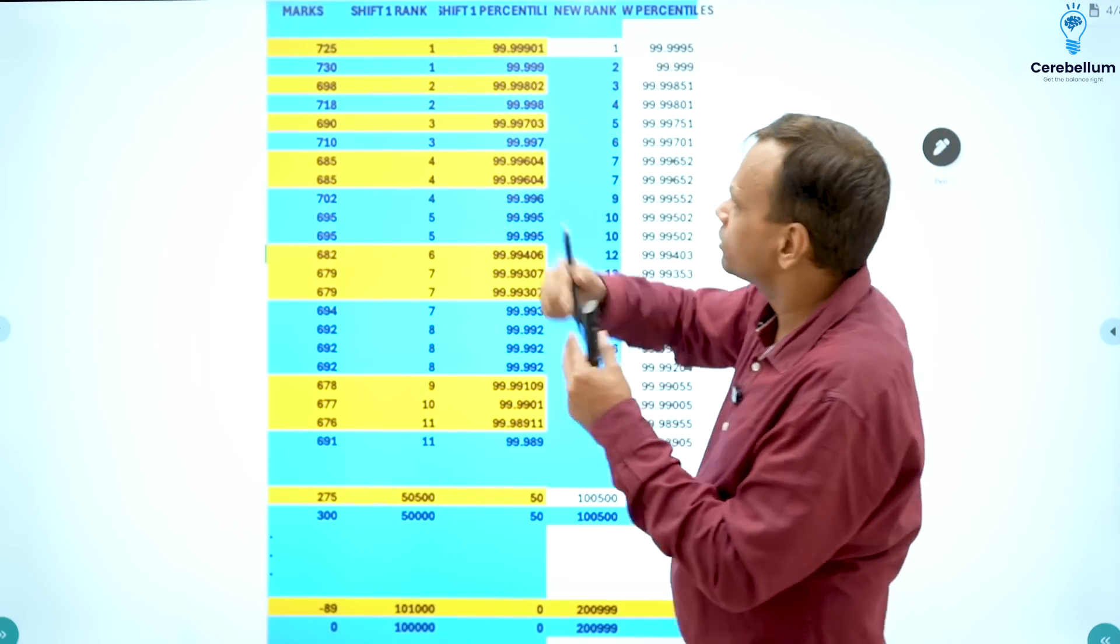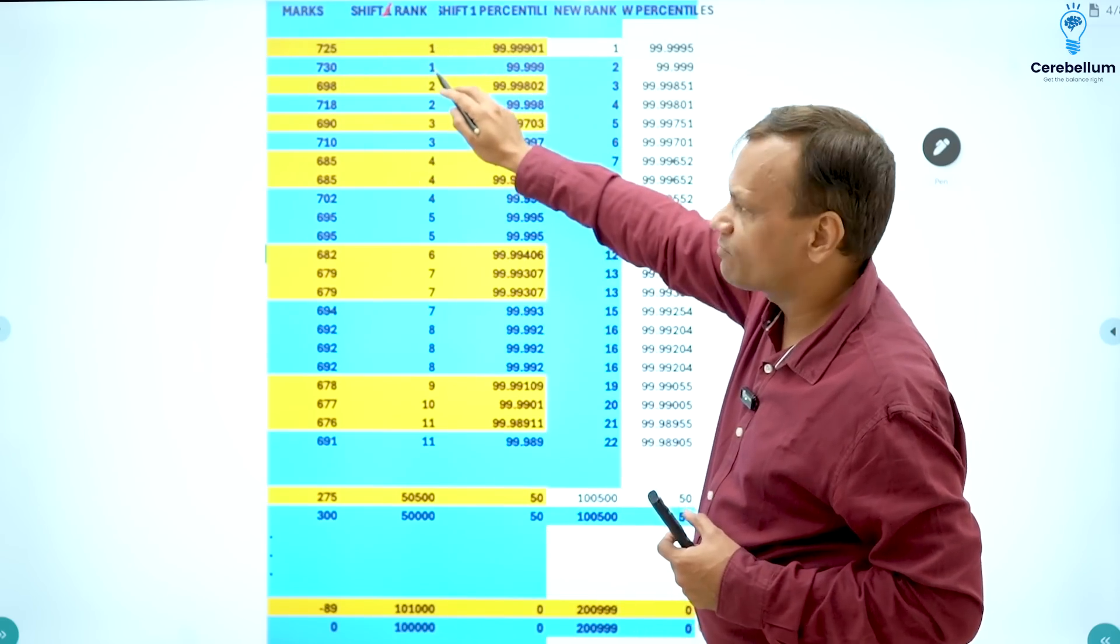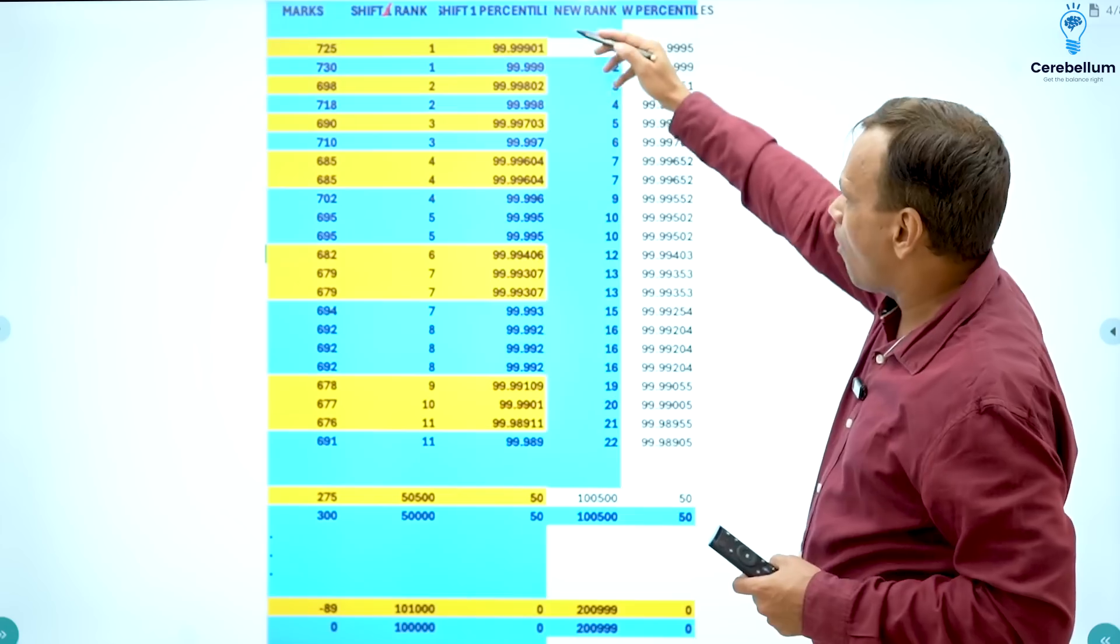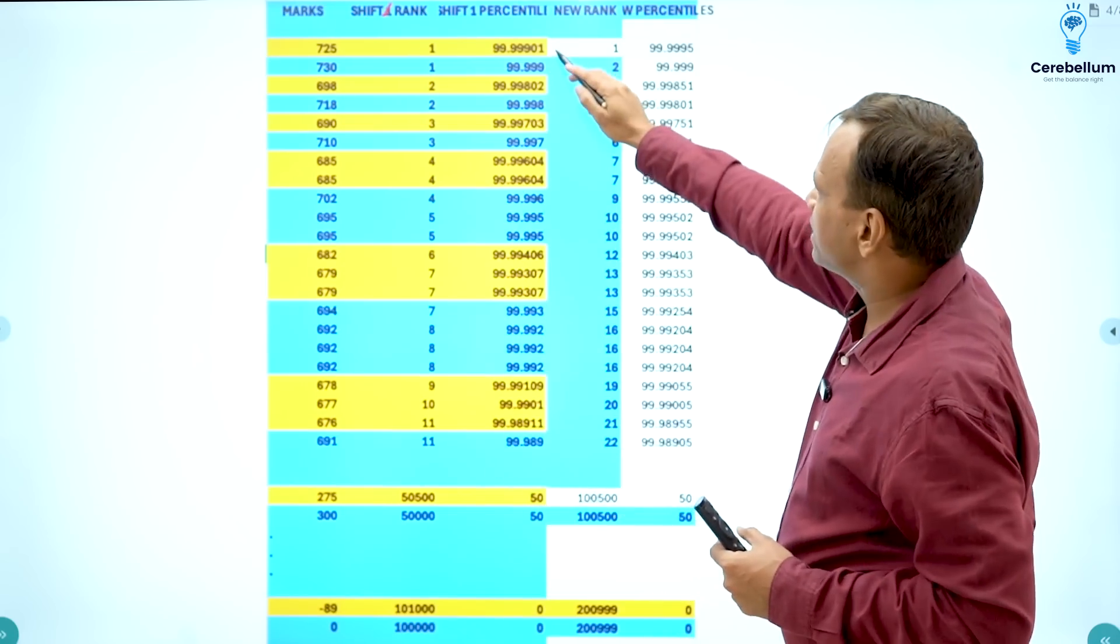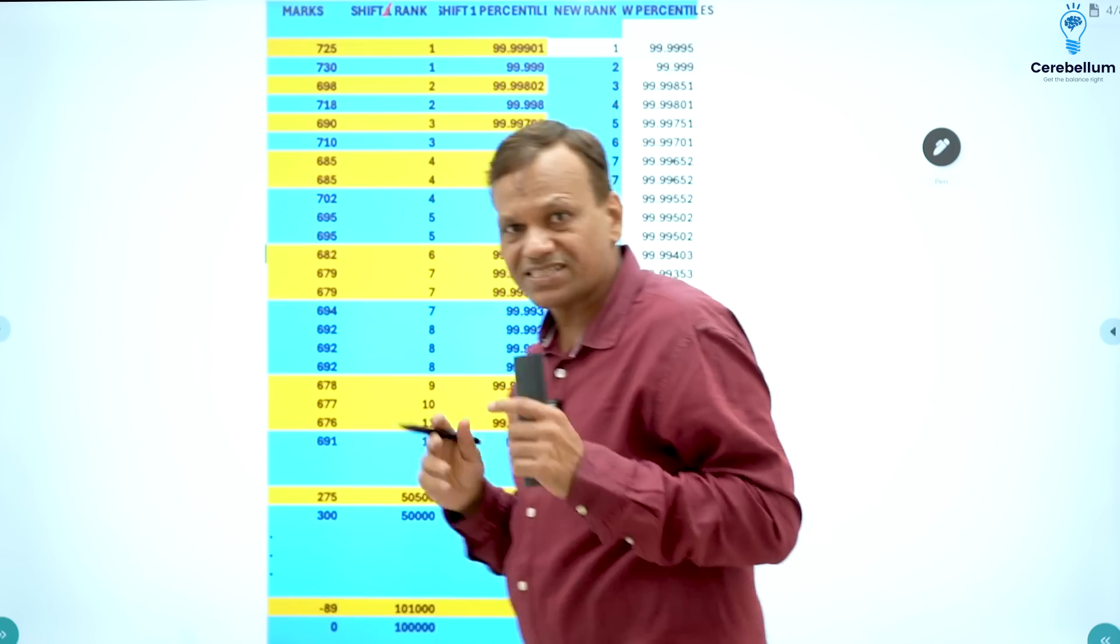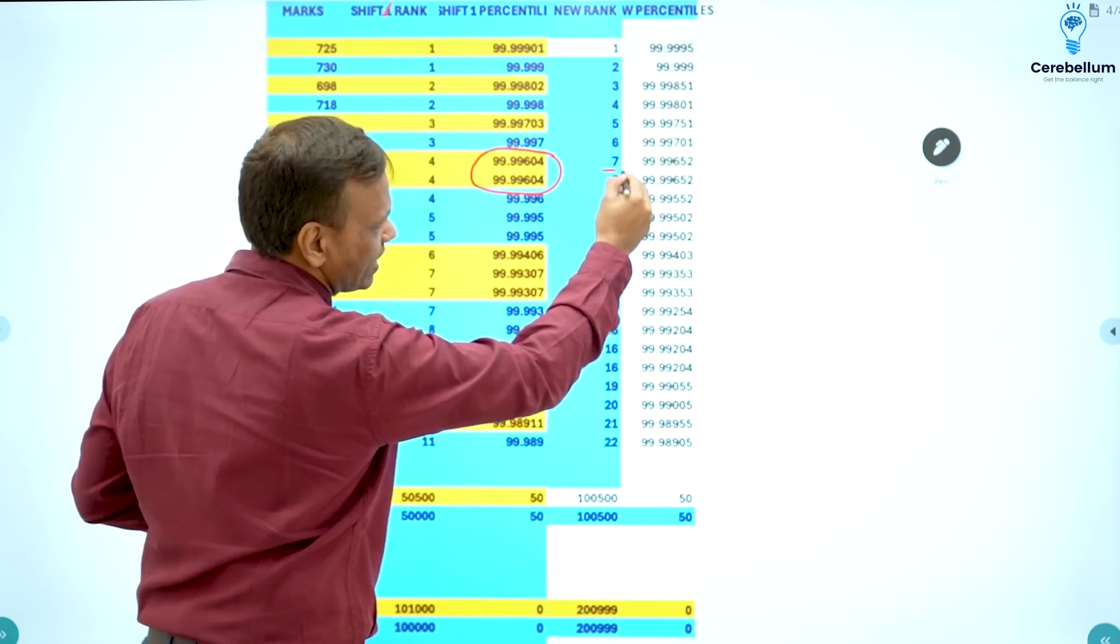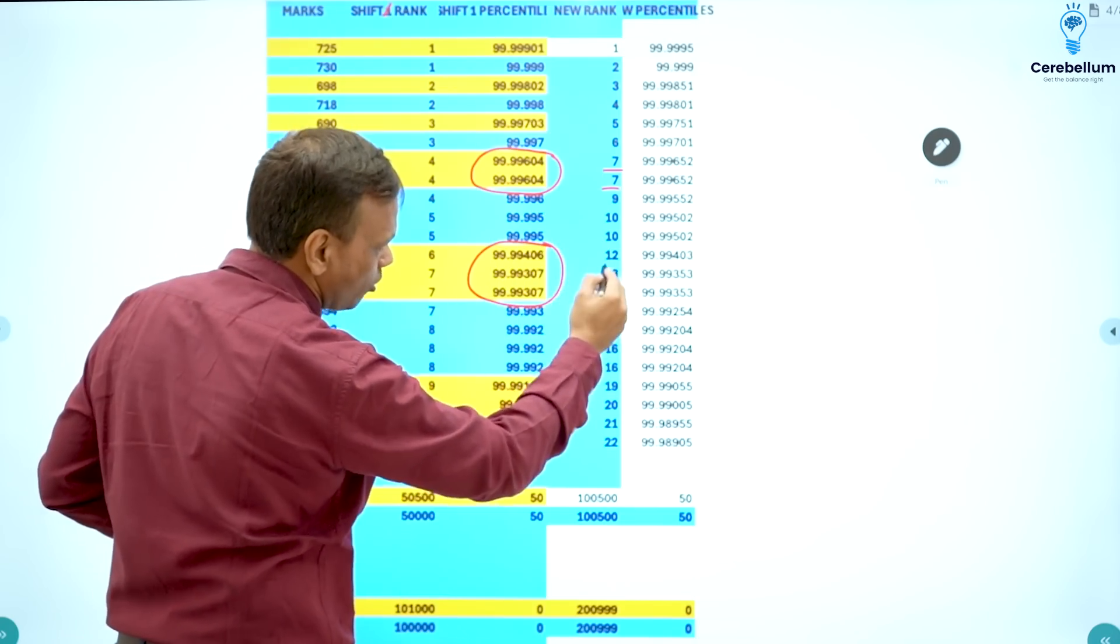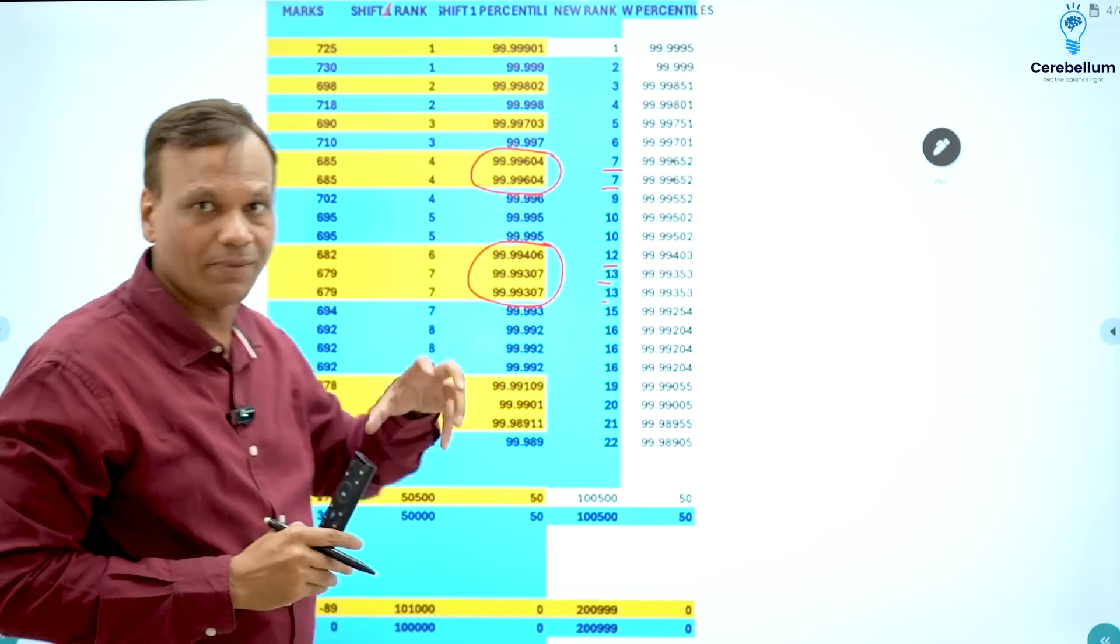So in this sequence the percentiles will be arranged and then they will be given the ranks. Yellow was shift 2, shift 2 rank was 1, shift 1 rank 1, shift 2 rank 2, shift 1 rank 2. In this sequence they will arrange. And now according to percentile, you will get the ranks. Whichever has a higher percentile will have higher rank, lower percentile will have lower rank. And if the percentile is same, the rank will be same. Like here the percentile is same, so both of them will get rank 7. Here the percentiles are same, so all three will get the same rank. So this is the raw rank you will get after normalization.